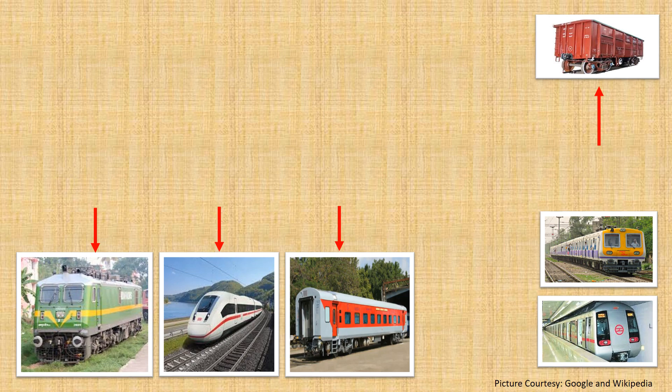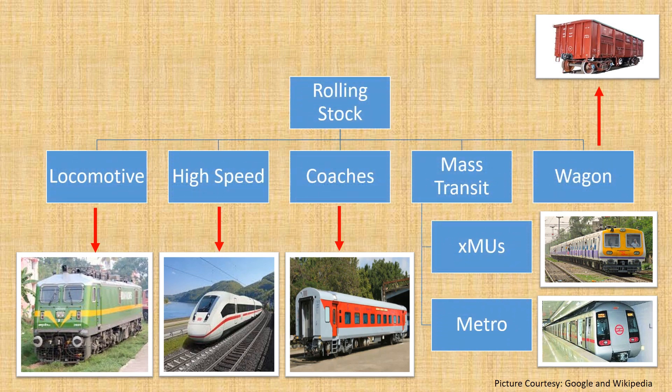Coming to the classification of the railway vehicle: the railway vehicle or rolling stock can be classified as locomotives, high-speed trains, coaches, mass transit, and wagons. Mass transit can be further classified as EMUs and metros. This video explains the overview of each vehicle, while detailed functionalities are explained in other videos. Here we focus only on the definition, uses in the field, top speed, and the distance covered by each vehicle.